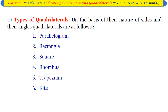Quadrilaterals, on the basis of their nature of sides and angles, are as follows: (1) Parallelogram, (2) Rectangle, (3) Square, (4) Rhombus, (5) Trapezium, (6) Kite.